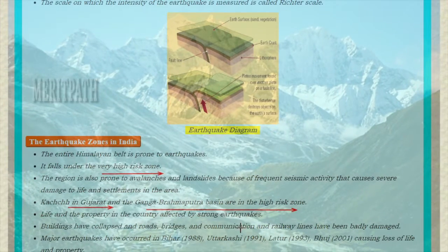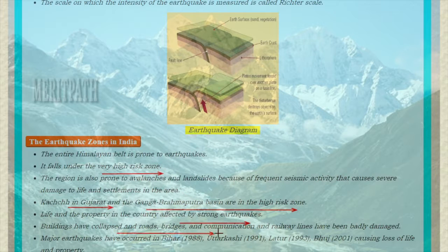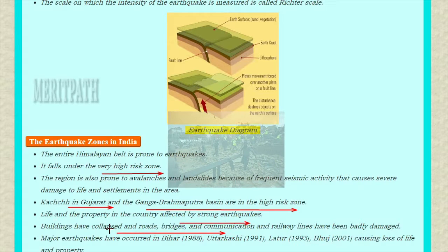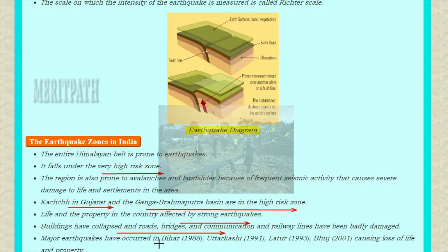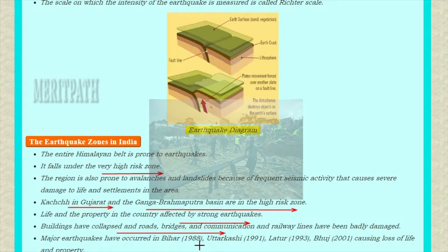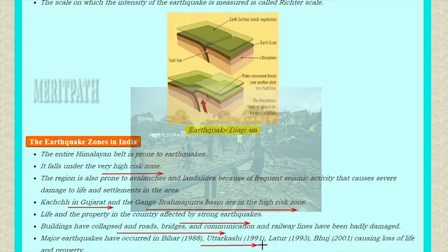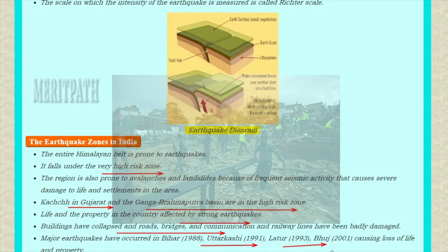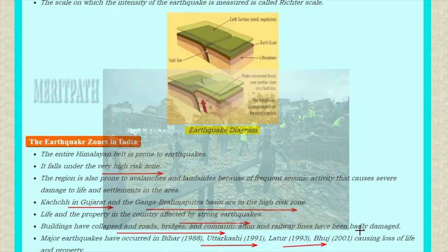Life and property in these areas are affected by strong earthquakes. Buildings have collapsed and roads, bridges, communications, and railway lines have also been damaged. Major earthquakes occurred in Gujarat in 1988, Uttarkashi in 1991, Latur in 1993, and Bhuj in 2001.